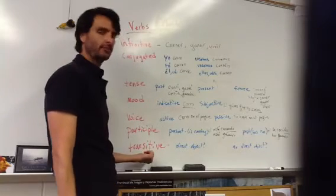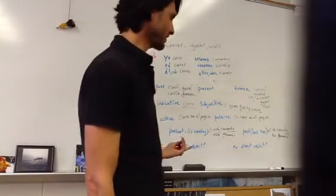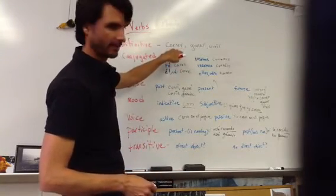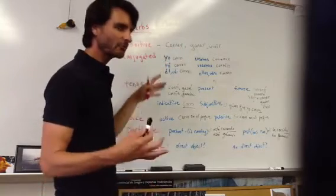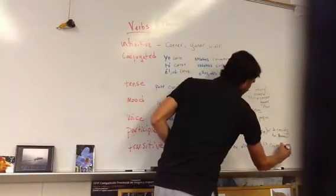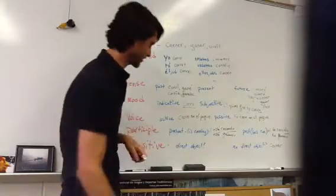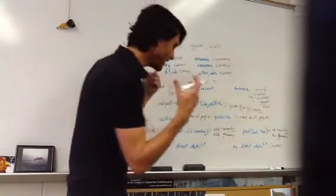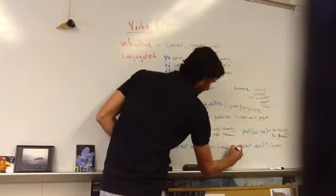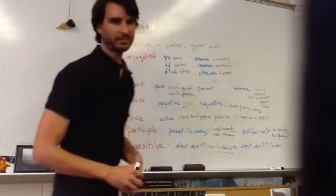We have transitive or intransitive — that basically tells us whether a verb can take a direct object or not. For example, correr: can I run somebody? Not really — so it cannot take a direct object. But ganar can take a direct object: yo gano la medalla, I win the medal. It is transitive because it can accept an object.